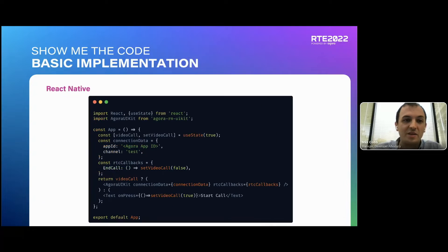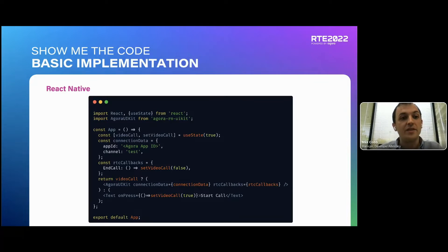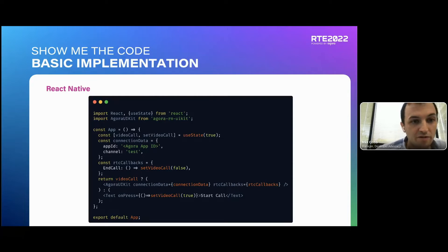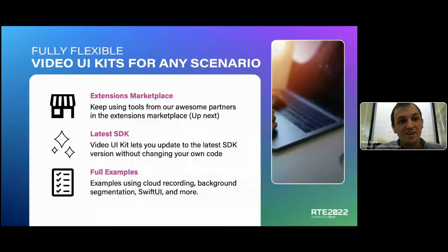This is a more state-based environment example — the previous one was regular iOS, which is more like creating an object and placing it. With React Native you create states to say whether something is visible on screen or not. You get your connection data with your credentials and the channel you want to join, and near the bottom where it says 'return video call?' that checks the state, then you return your Agora UI Kit with your connection data — and that's all there is to it.